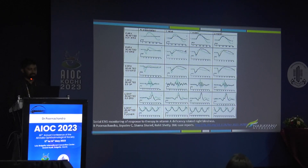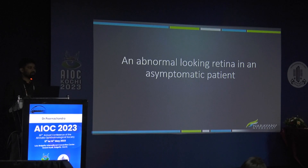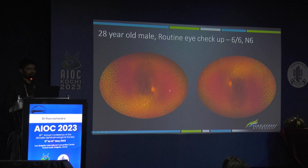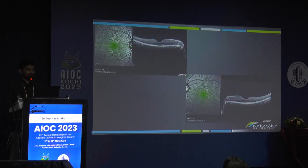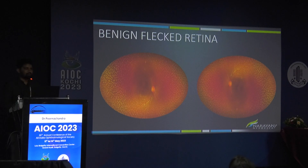Now let's look at a case where the retina looks abnormal but the patient is asymptomatic. A 28-year-old male came for routine checkup with 6/6 vision. The fundus had multiple fleck-like changes throughout, sparing the macula. OCT was absolutely normal. We did a full-field ERG — and the full-field ERG was normal. So this is a case of benign fleck retina: a non-progressive disorder. We don't need to do anything — the patient just needs to be counselled and come for regular follow-up.